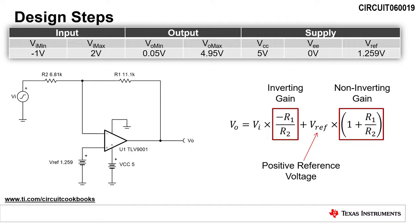The equation for V_O is the transfer function of the circuit. The term -R1/R2 is the inverting gain applied to the input voltage V_I. The term (1 + R1/R2) is the non-inverting gain, which is applied to the positive reference voltage.